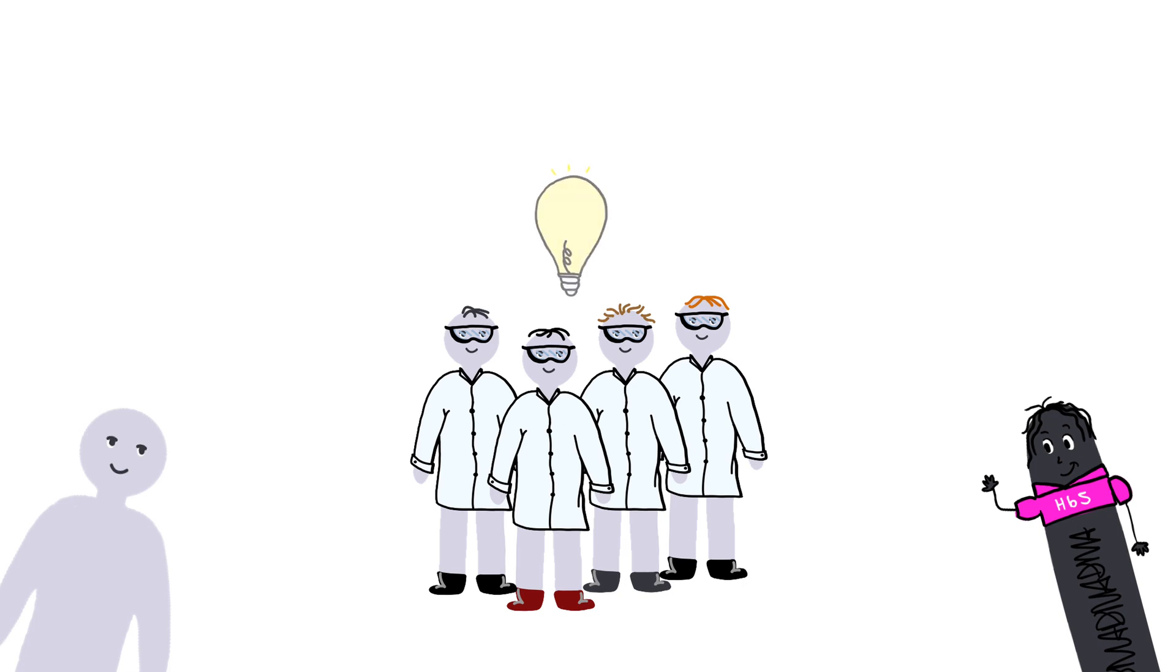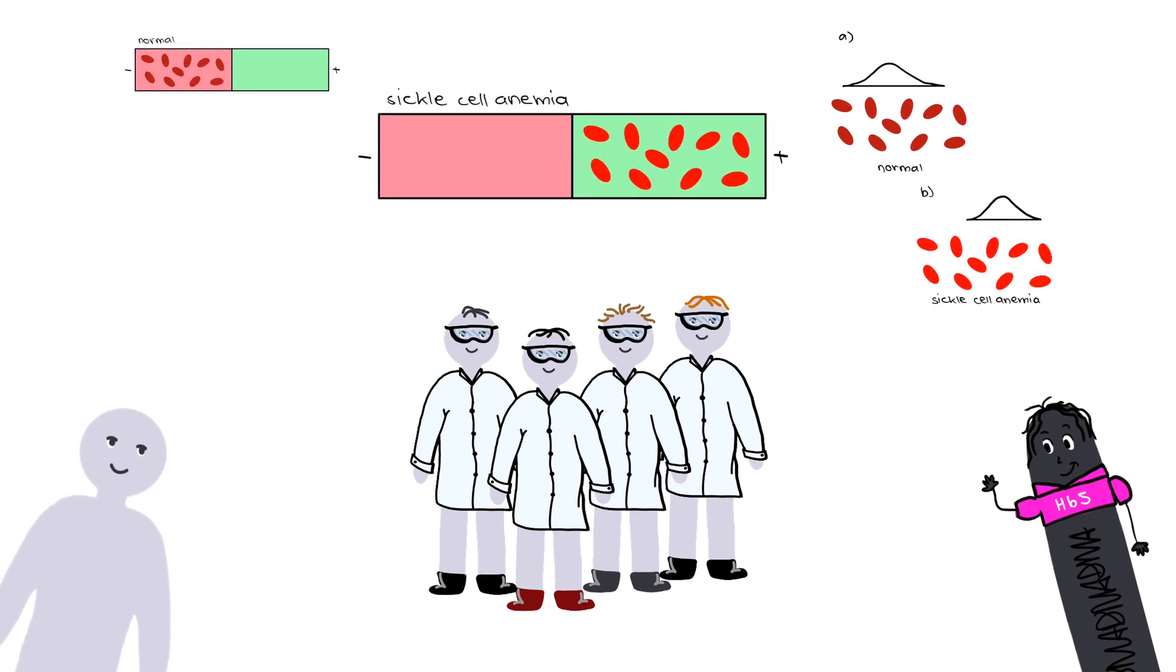To answer this question, they tested and compared the electrophoretic properties of hemoglobin. They found that hemoglobin from normal red blood cells moved as a negative charge, while hemoglobin from individuals with sickle cell anemia moved as a positive charge.